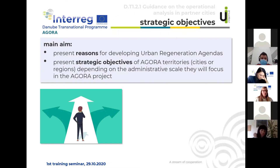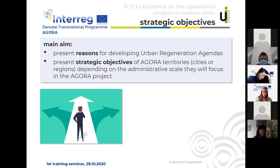The main aim of the strategic objectives chapter is to present reasons for developing urban regeneration agendas and to present the strategic objectives of Agora territories. Of course, depending on the administrative scale, they will focus on the Agora project.